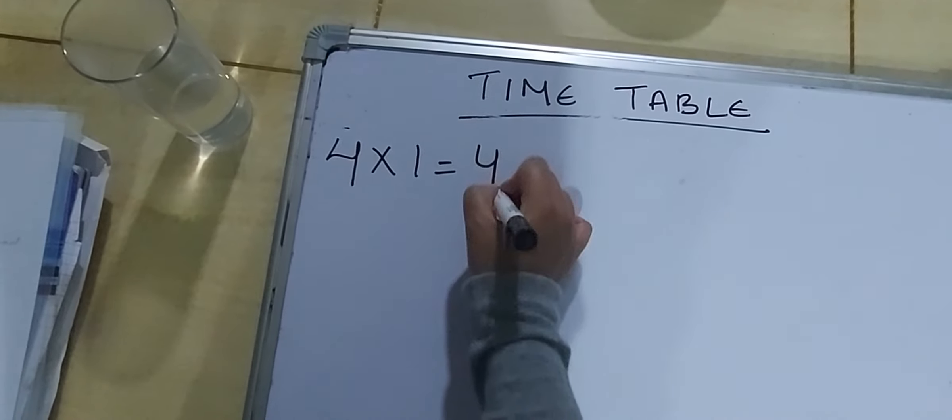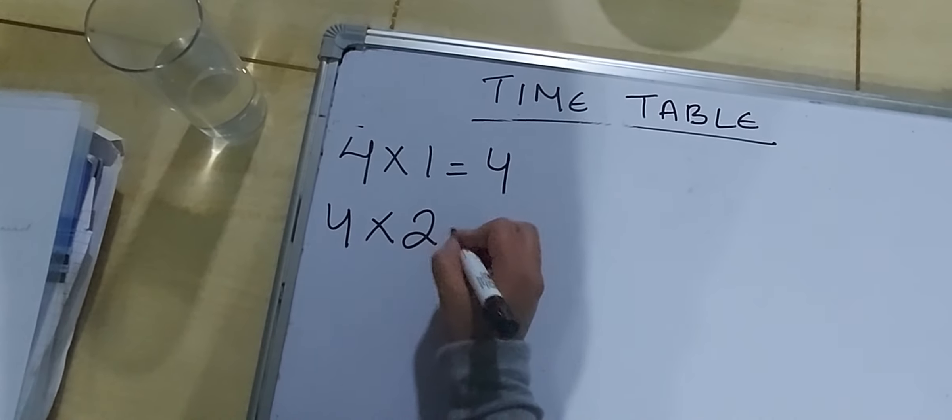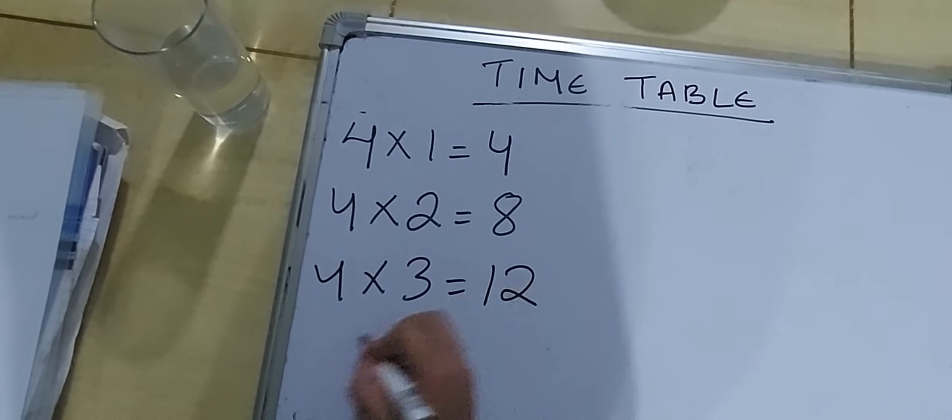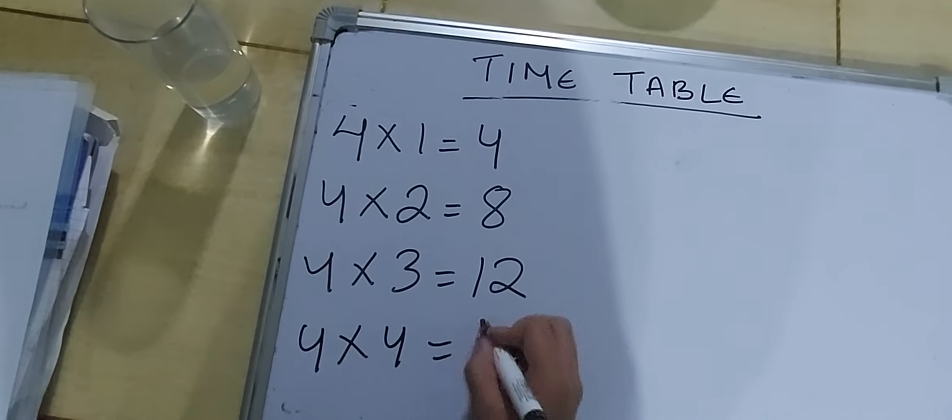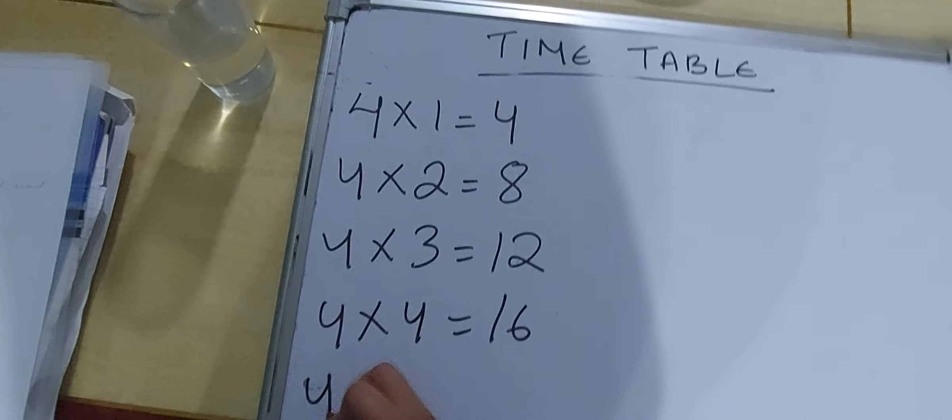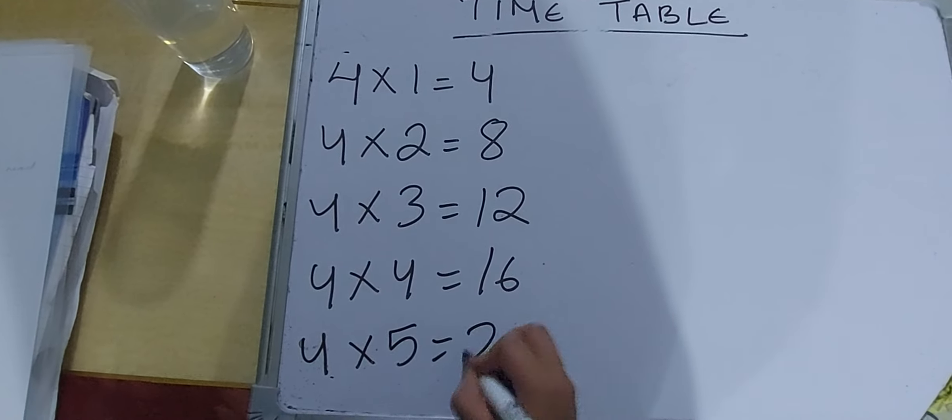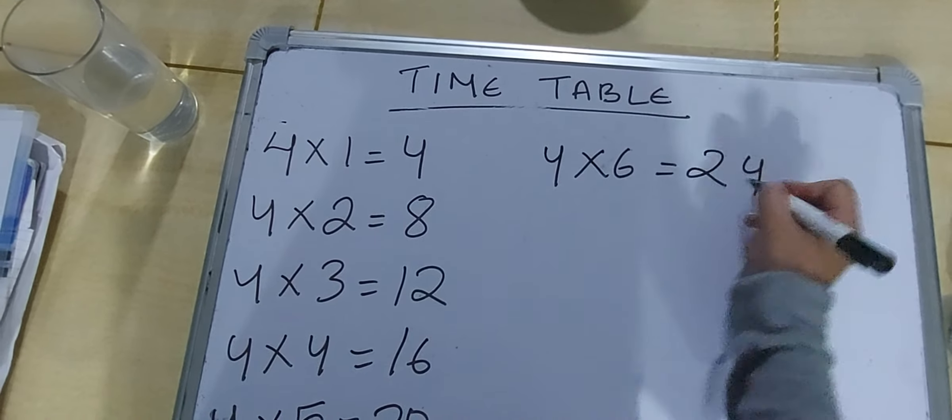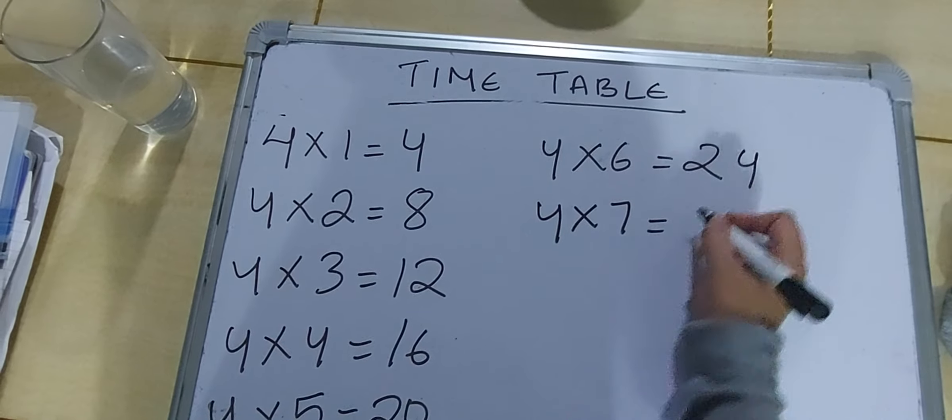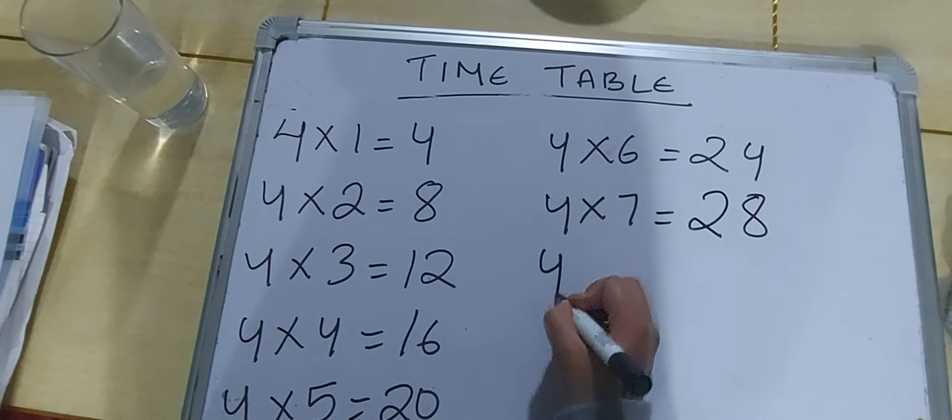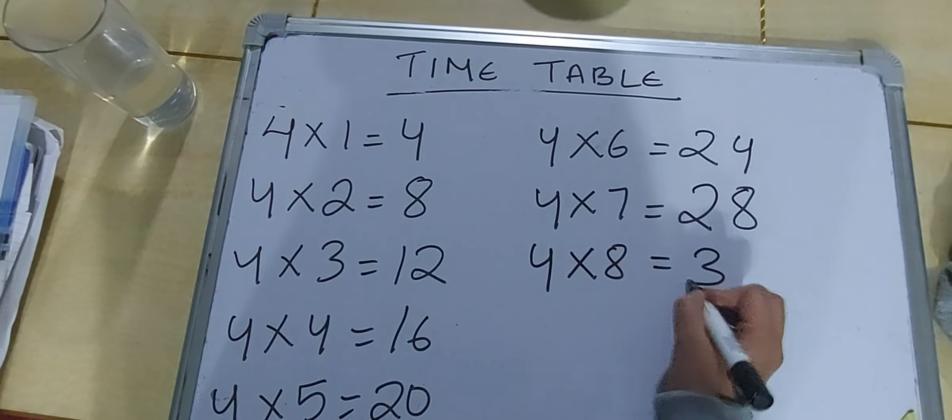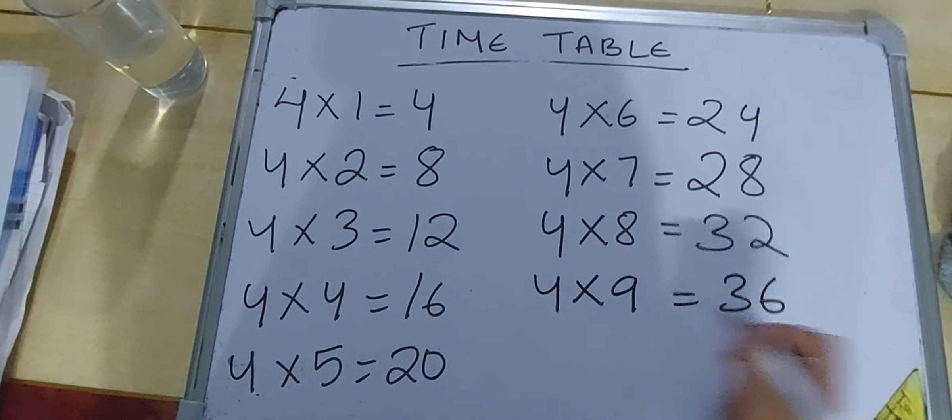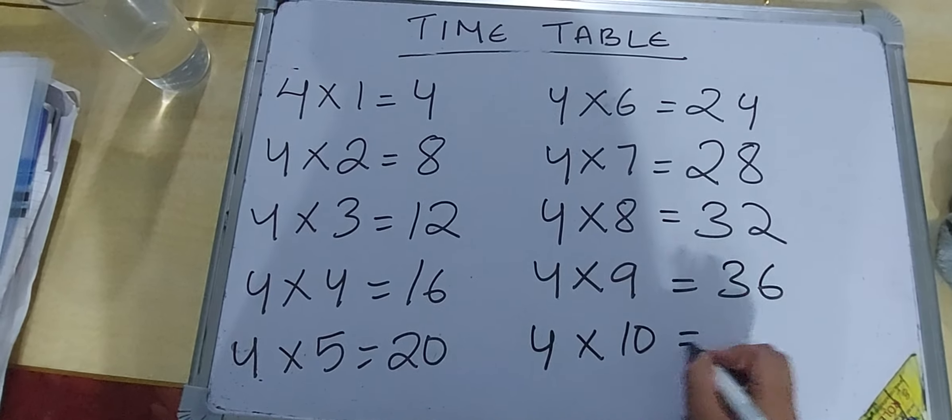Four one is four. Four twos are eight. Four threes are twelve. Four fours are sixteen. Four fives are twenty. Four sixes are twenty-four. Four sevens are twenty-eight. Four eights are thirty-two. Four nines are thirty-six. Four tens are forty.